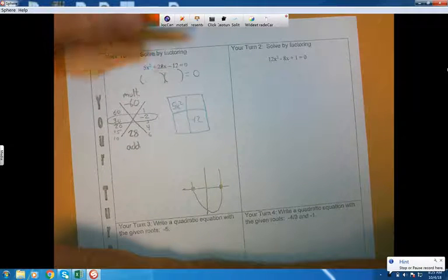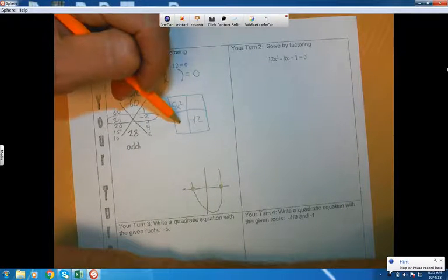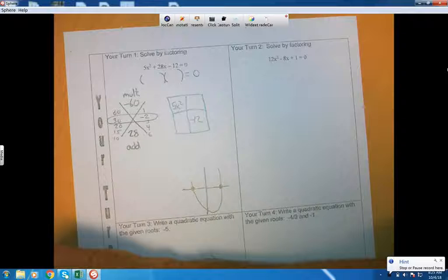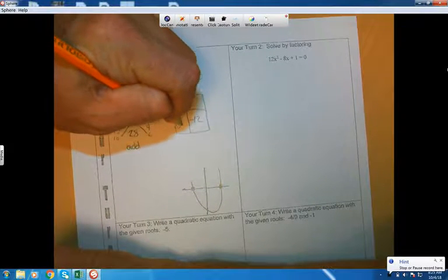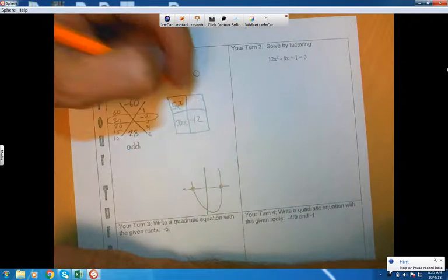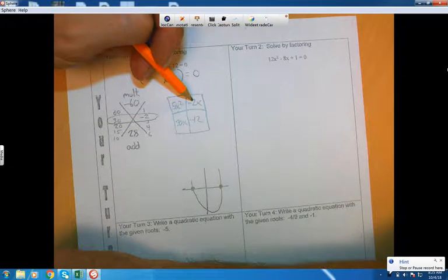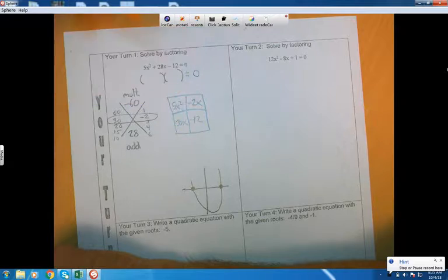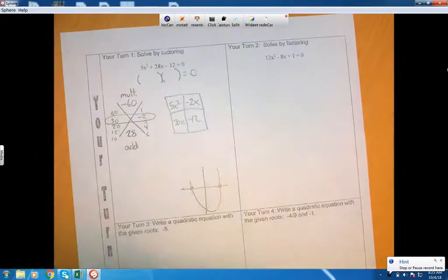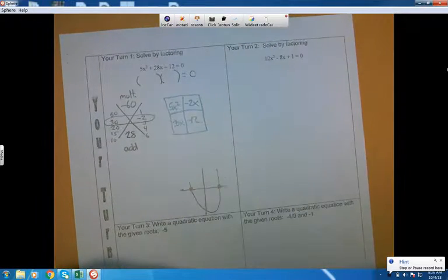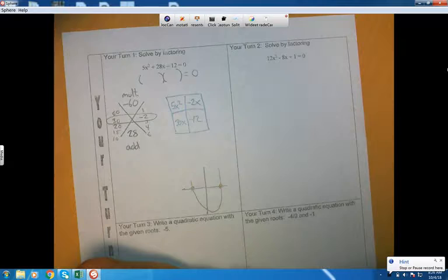And remember why we did that. We had to split up this 28x's. So some of the x's will go here, some of them will go there. And now we know that 30 of the x's will go into one of the boxes, and negative 2x's will go in the other box. And it didn't matter. If I put the 30x right here and the negative 2x right there, that would have been just as good.